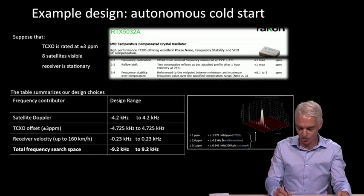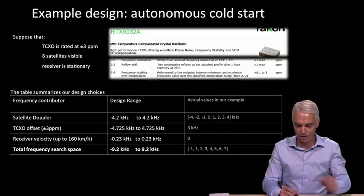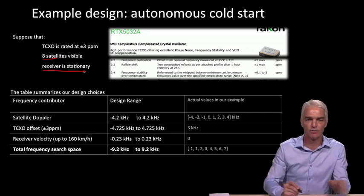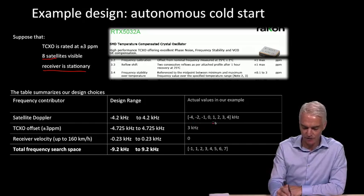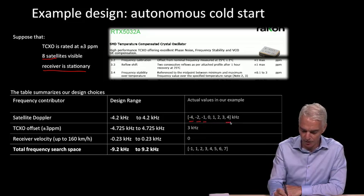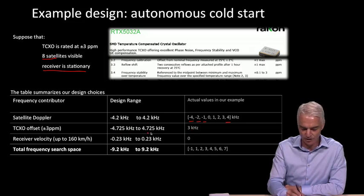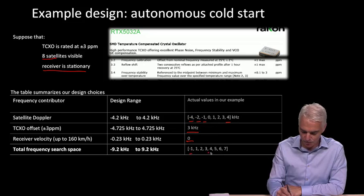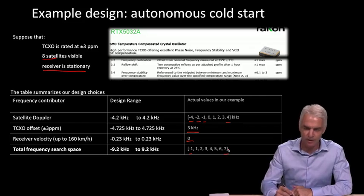Now we'll put actual values using these assumptions. We said there are eight satellites visible and the receiver is stationary. Let's organize those satellites so the Dopplers are spaced: one satellite at minus 4 kilohertz, minus 2, minus 1, and so on up to plus 4 kilohertz. We'll assume this TCXO has an offset of 3 kilohertz, and since we're stationary there's no Doppler from user motion. So the actual observed satellite frequencies are the satellite Doppler plus the TCXO offset, giving us values from minus 1 kilohertz to plus 7 kilohertz.